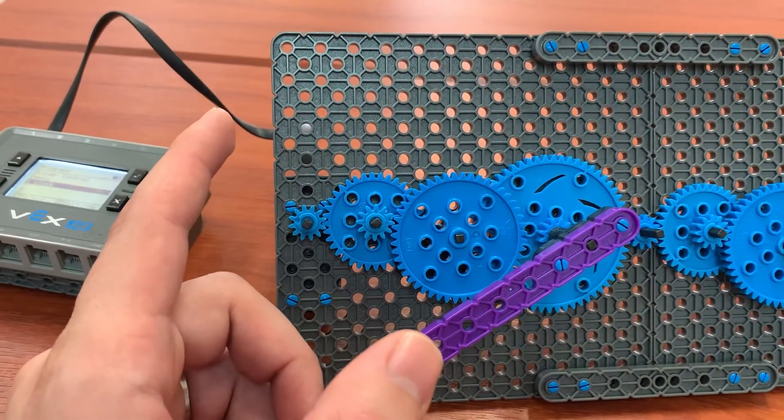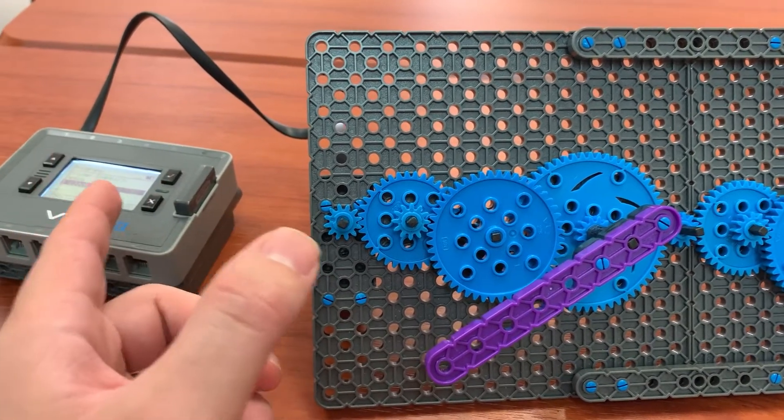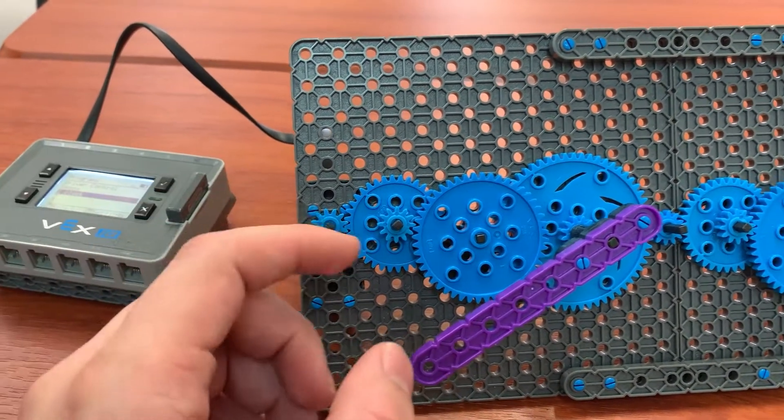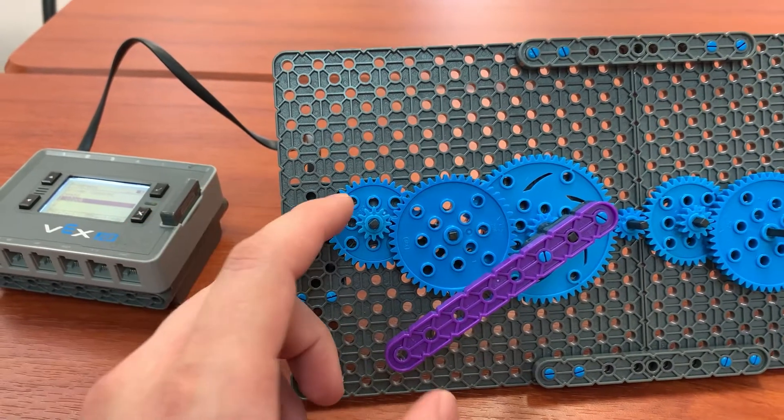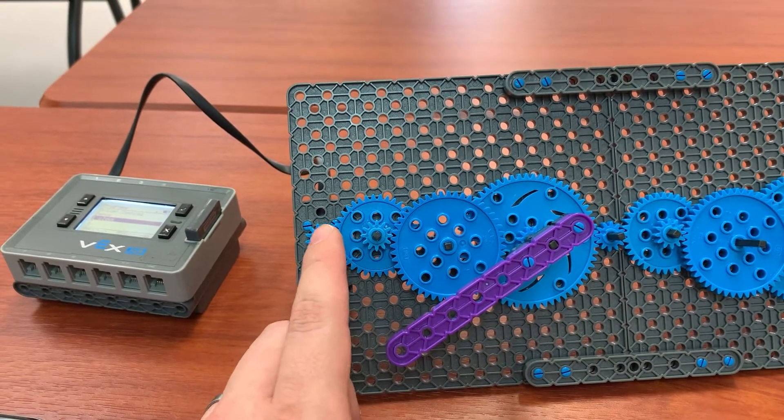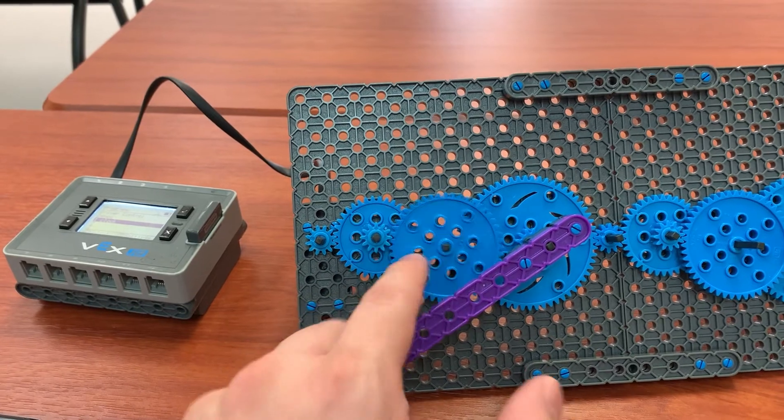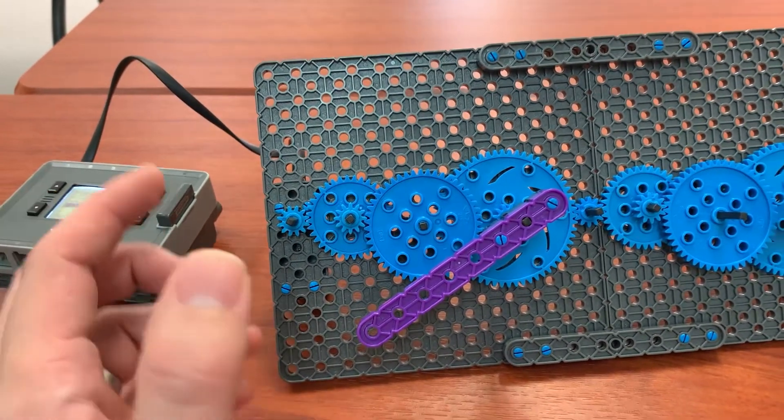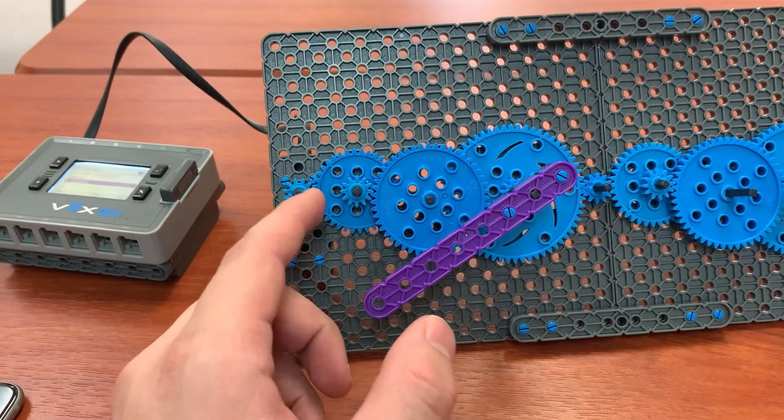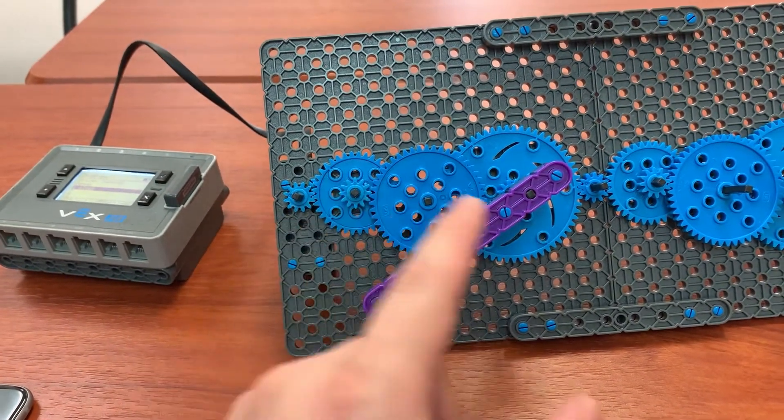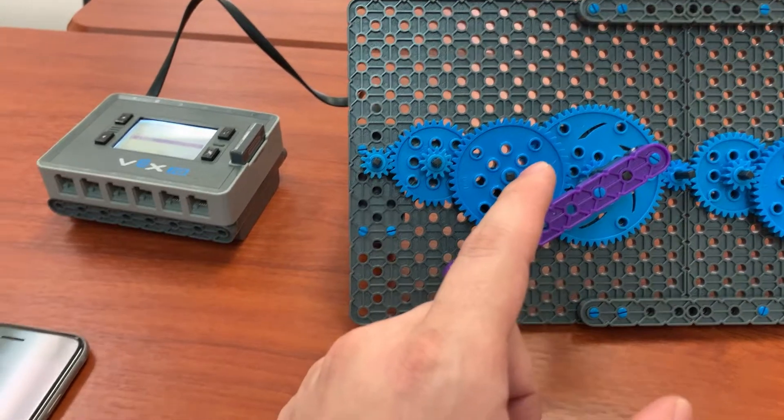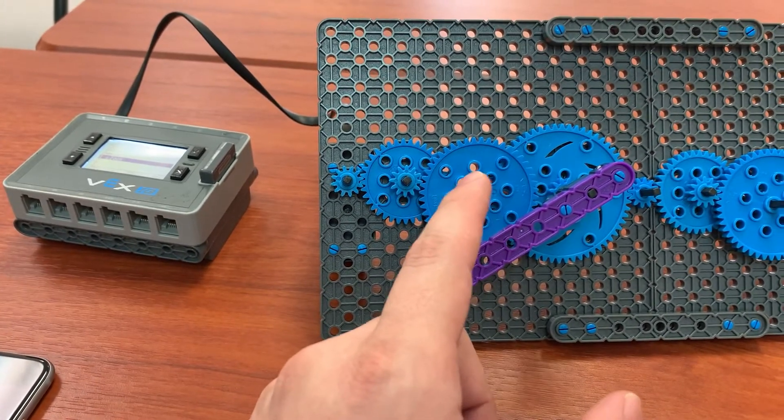So we talked about why that was occurring. Initially, he thought maybe it was just a bad motor or the program was wrong somehow. But then I got him to focus in on kind of what's happening in between these, how they're all rubbing together. And as soon as I said rubbing together, he said friction. So yes, anytime you have friction, you're going to lose some efficiency in your drivetrain.